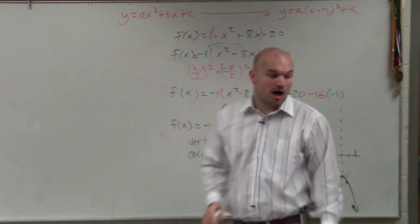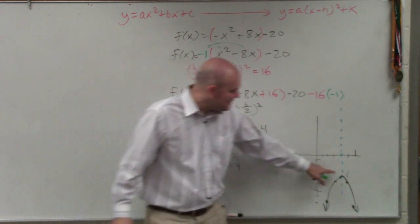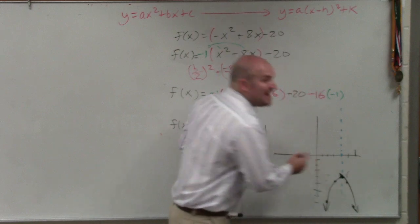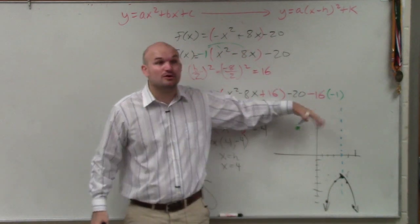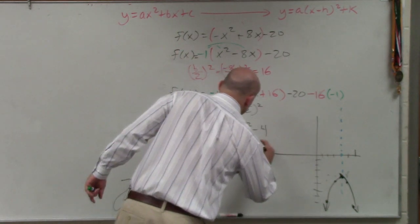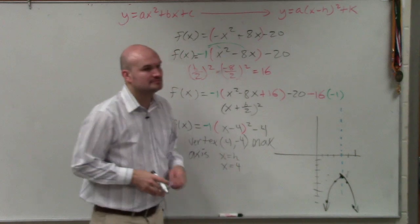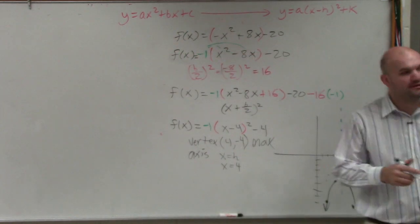All right? So our vertex is at 4, negative 4. Is that point right here? Is that a maximum or a minimum point of your graph? Think about the y value. Is that the highest point or the lowest point of the graph? The highest. So therefore, this is a max. And just for fun, let's determine what the domain and range is.